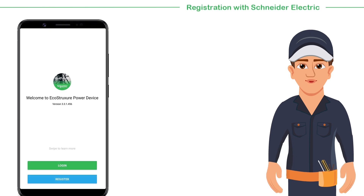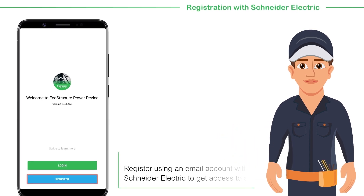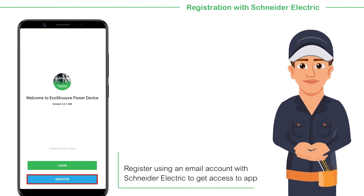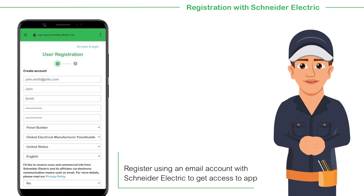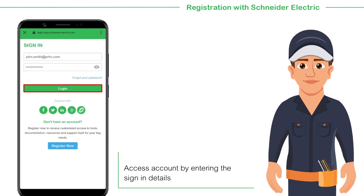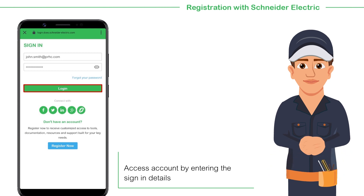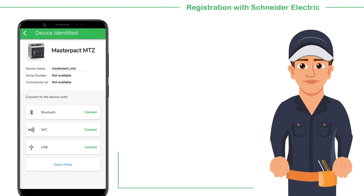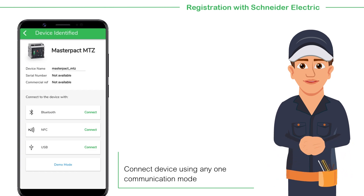Once you have successfully downloaded the app, you need to register using an email account with Schneider Electric to get access to the app. Enter the required details and submit to register. Once registered, log in to get access. Note that the login credentials are required only for the first time access. After login, you will be prompted to connect the device using any one mode.